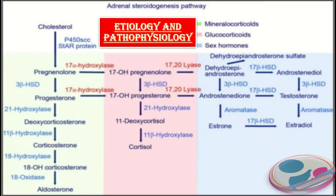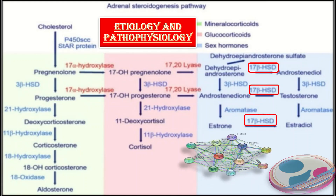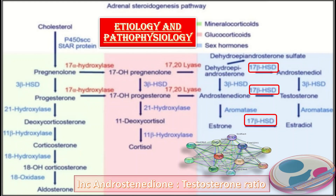The disorder we are discussing is caused by the deficiency of 17-beta-hydroxysteroid dehydrogenase. There are mutations in the HSD17B3 gene that cause 17-beta-hydroxysteroid dehydrogenase deficiency. The HSD17B3 gene provides instructions for making this enzyme. In terms of diagnosis, there is an increased androstenedione to testosterone ratio. This enzyme is active in the testes, where it helps produce testosterone from a weaker precursor androgen called androstenedione.